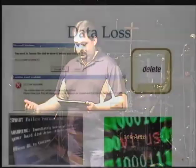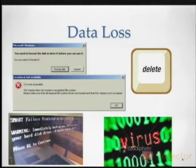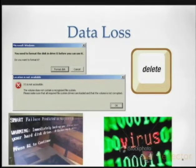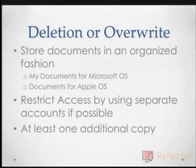Today I'm going to talk about four types of data loss. The first is deletion — and I also include being overwritten here, because that happens as well, where you accidentally overwrite a file with another file without realizing it. The second is file system corruption. Third, physical device failure. And fourth, viruses and malware, and how they can cause data loss.